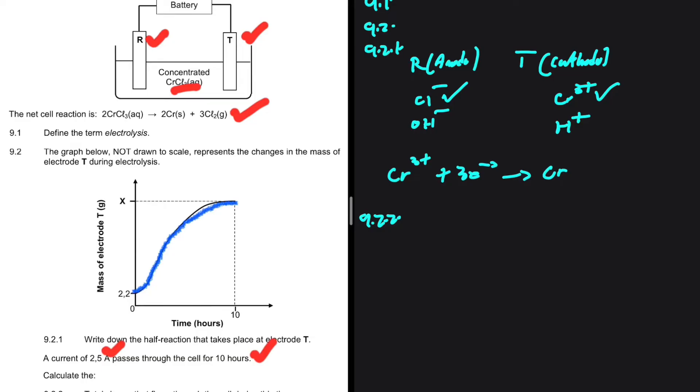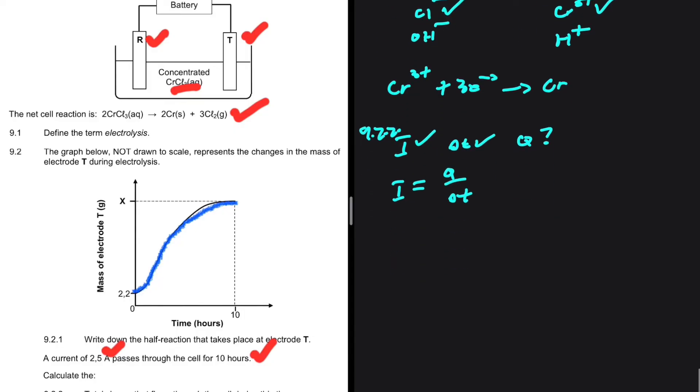9.2.2. A current of 2.5 ampere passes through the cell for 10 hours. Let's calculate the total charge that flows through the cell during this time. So, we have the current. We have the time. We are looking for the charge. Which equation can we use? The current is the rate of flow of charge. So, we're going to have the current being equals to the charge divided by the time. In order to find the charge, we can simply cross multiply. And have the current 2.5 multiplied by time. Multiplied by the time, which is 10 hours. But we know that our time is supposed to be in seconds. So, we're going to have 10 hours multiplied by 60 minutes multiplied by 60 seconds. If you put that in your calculator, you're going to get 90,000 coulombs. This is the charge, the amount of charge that flows through the cell during this time. 9.2.2.